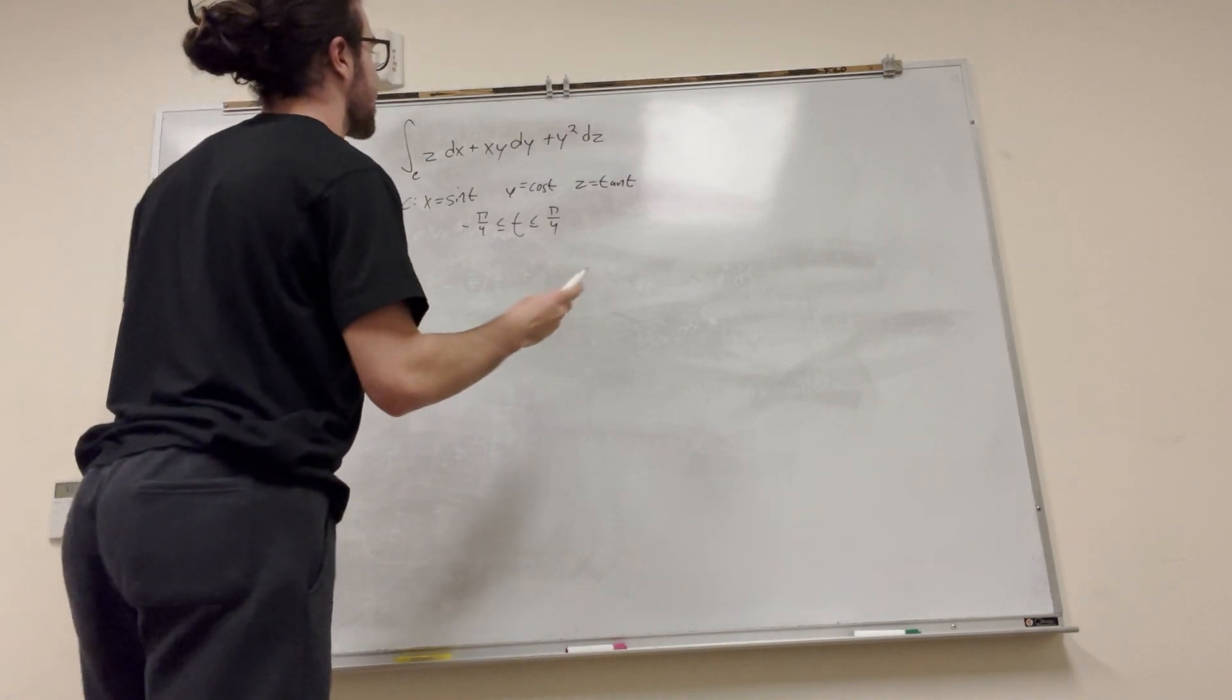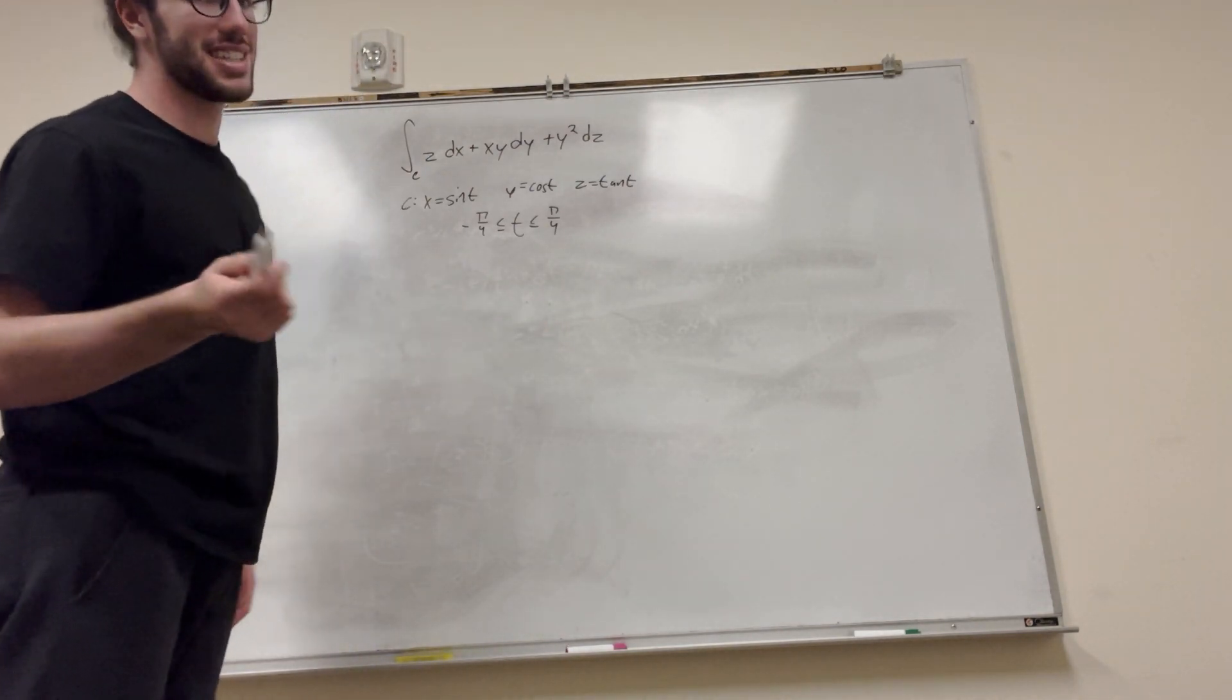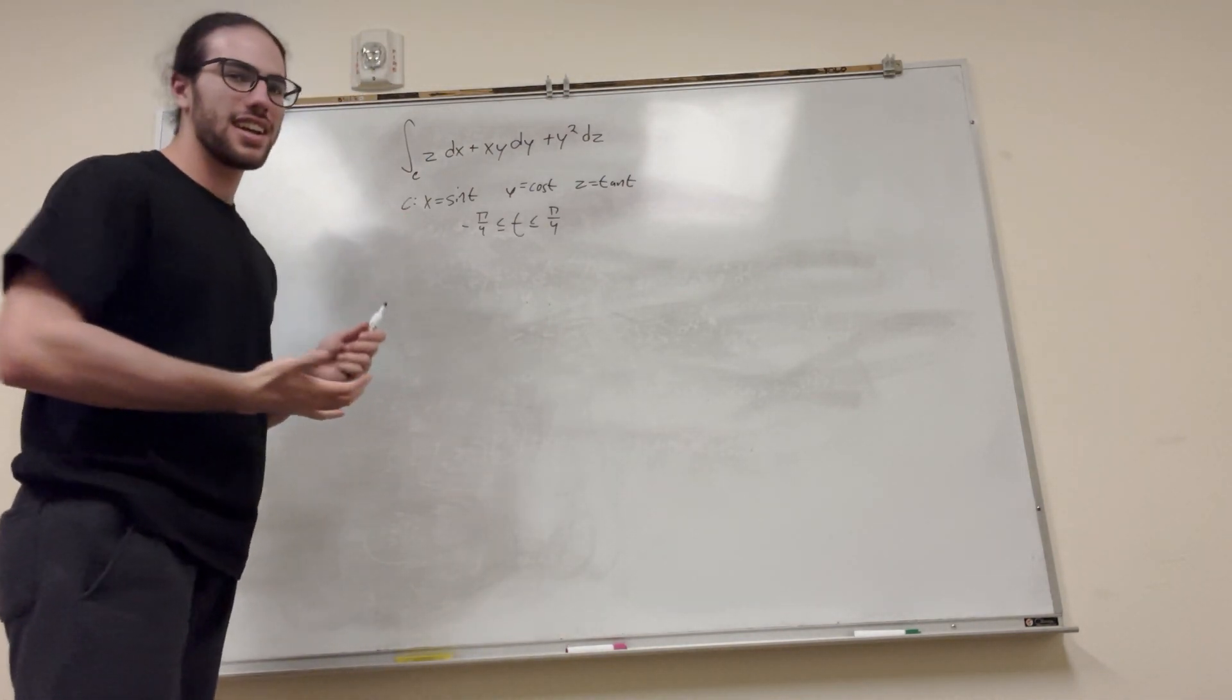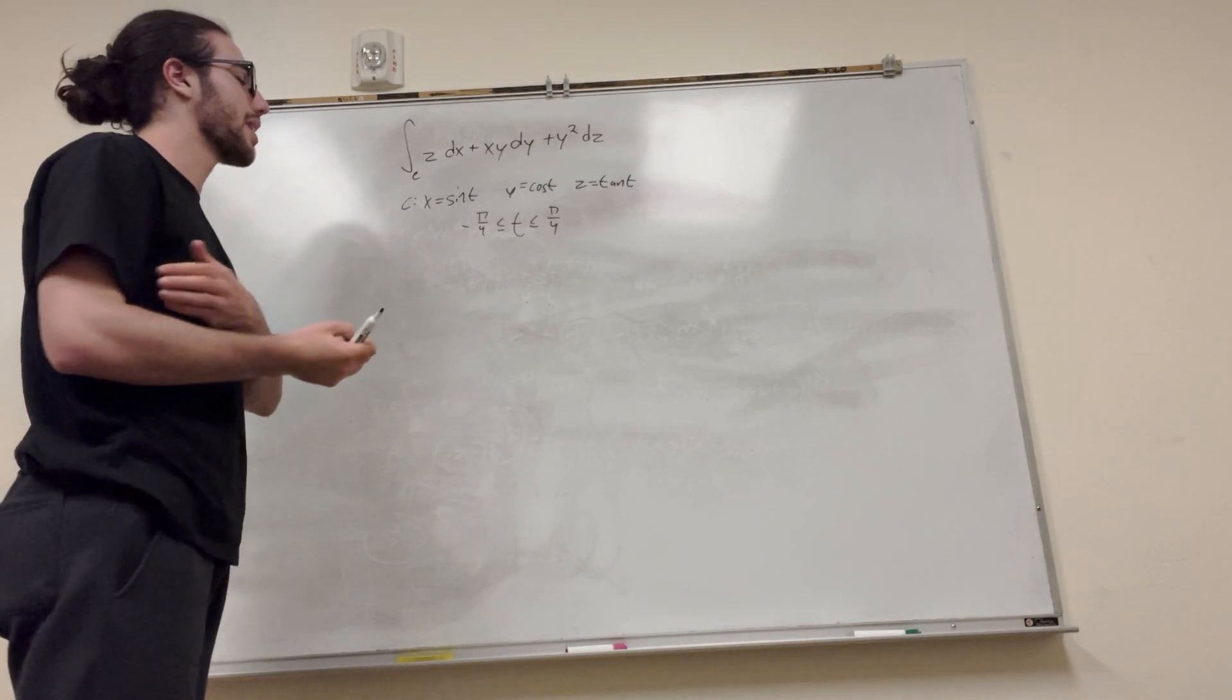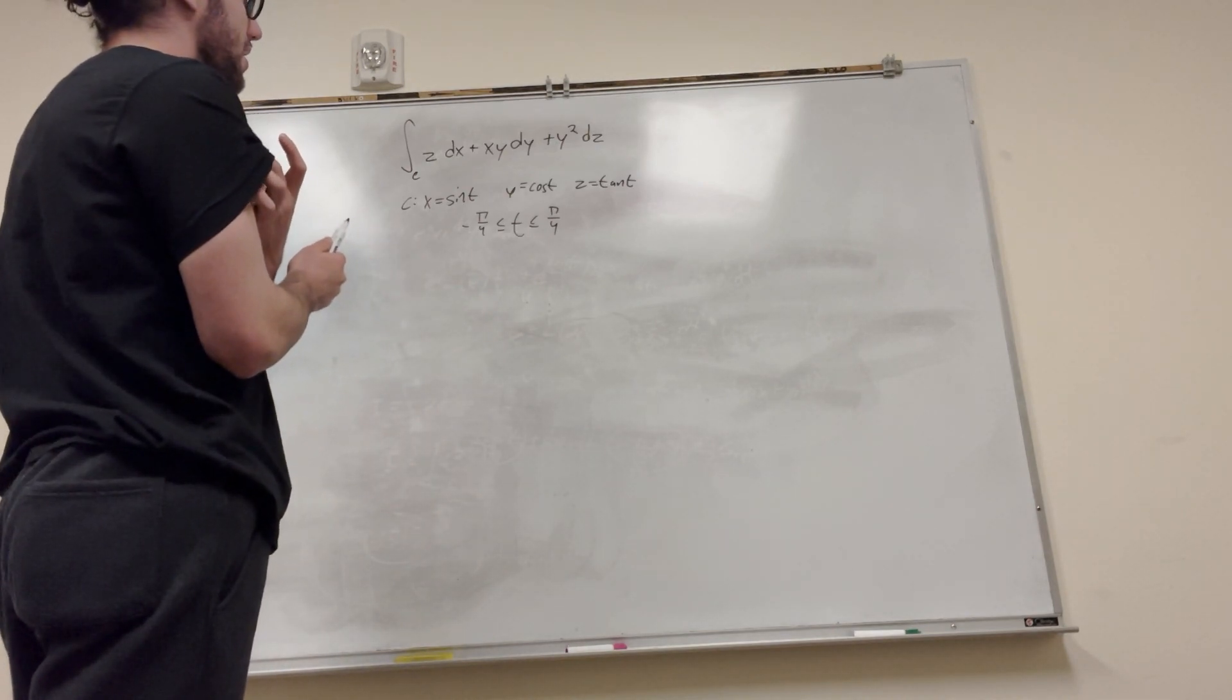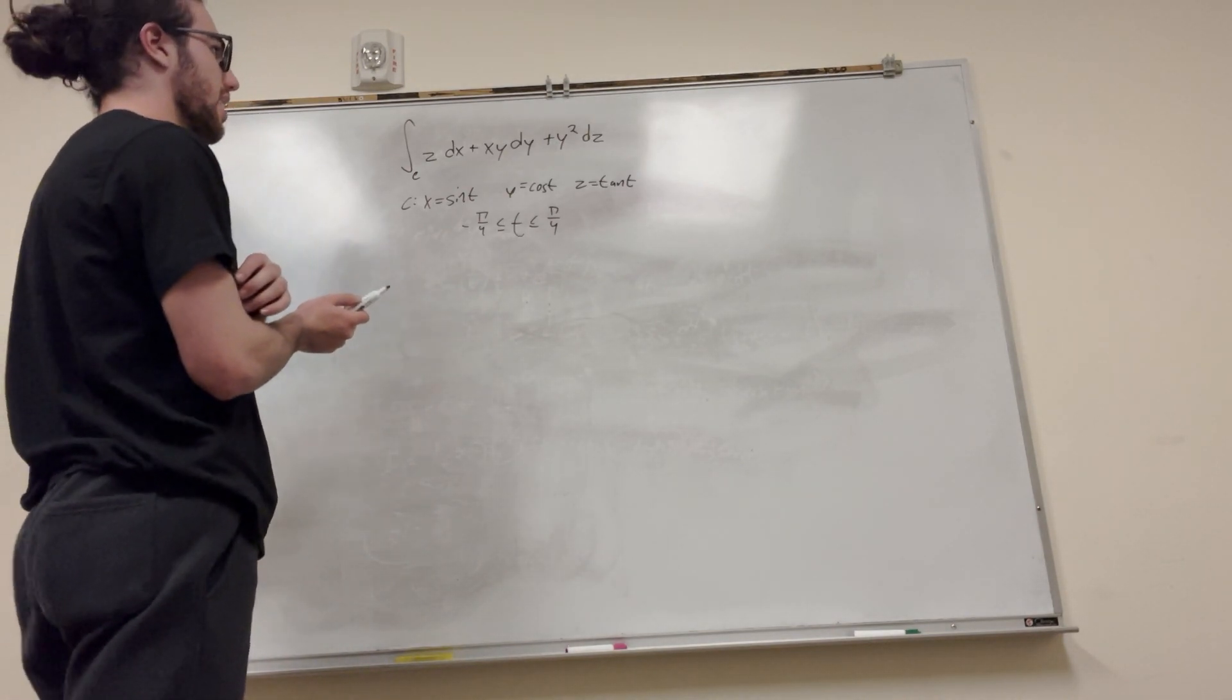Well, when you get this big line integral function with x, y, and z in it, dx, dy, dz, you want to just convert everything to dt and t, because you can't solve an integral with multiple functions unless you're doing triple integrals or whatever. But with just one integral, you've got to convert everything to one function to get a nice one answer.